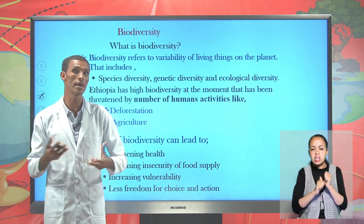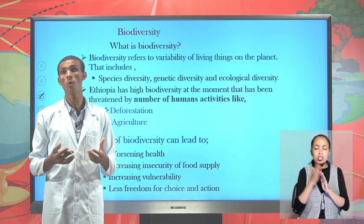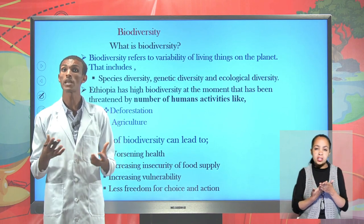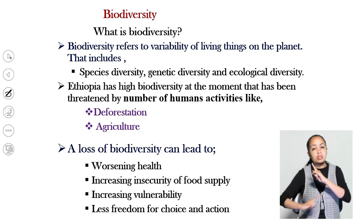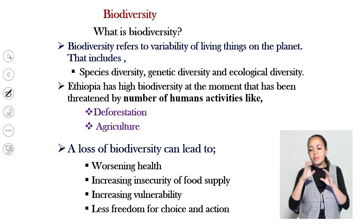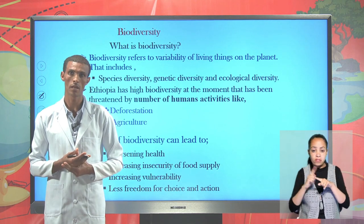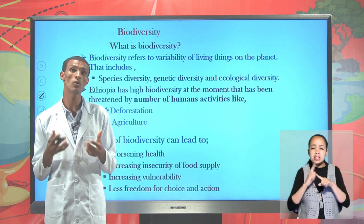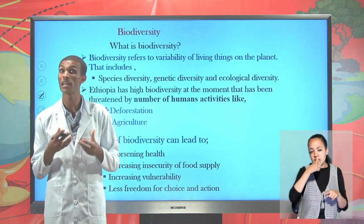The next point we are going to see together is biodiversity. When we say biodiversity, it deals with the variability of species — variability in terms of genetics and ecological variability. Because of the presence of different biomes, many climatic zones, and different latitudinal and altitudinal zones, Ethiopia is a highly ecologically diversified country.